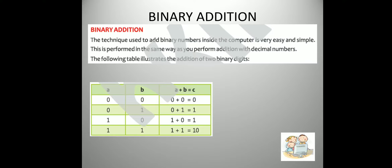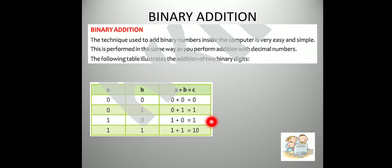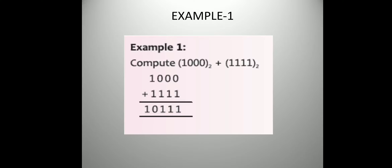Now you can see this table: 0 plus 0 equals 0, 0 plus 1 equals 1, 1 plus 0 equals 1, and 1 plus 1 is 10. This rule you will apply.